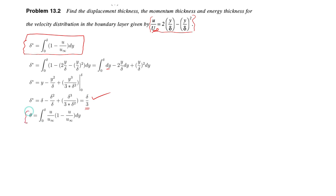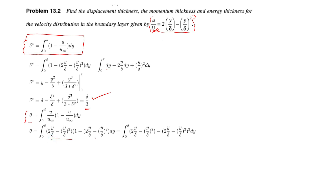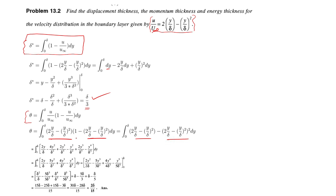For momentum thickness, theta equals the integral from 0 to delta of (u over u-infinity) times (1 minus u over u-infinity) dy. Substituting u over u-infinity equals 2y over delta minus (y over delta) squared, then expanding the bracket and integrating, you finally get 2 delta over 15. That is the momentum thickness.